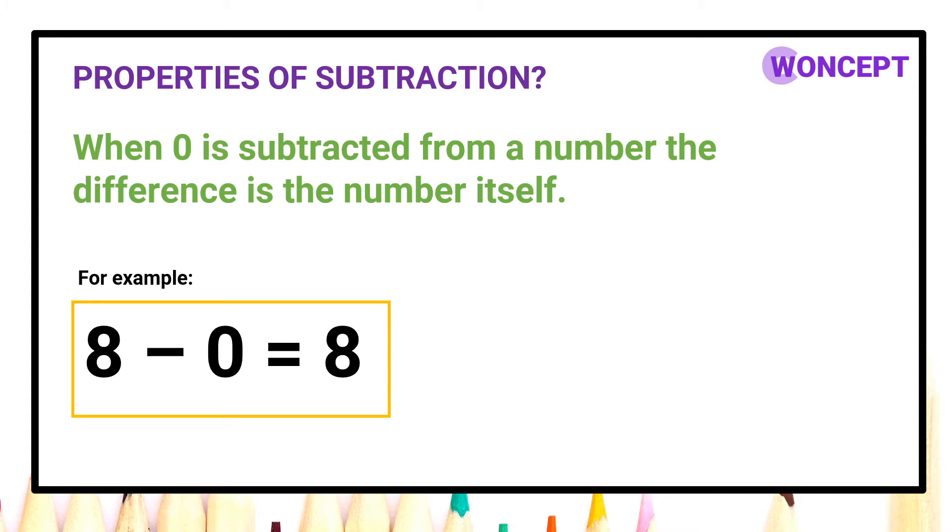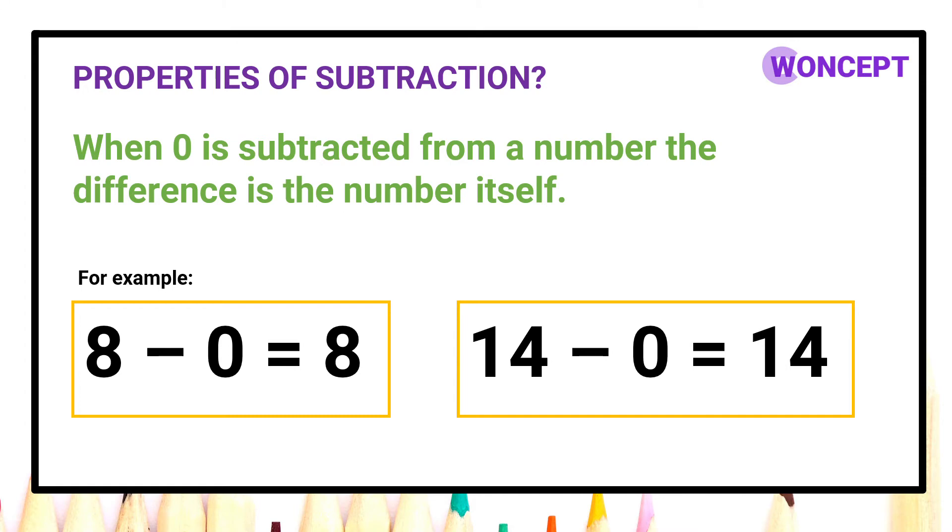Let us have another example. 14 minus 0 is equal to 14. So you have understood? When 0 is subtracted from a number, the difference is the number itself.